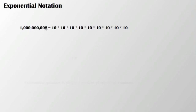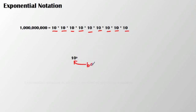Let's take a look at the number 1 billion. In this case, we're trying to see how many times is the base 10 used as a factor. We can see that in order to get a billion, I have to take 10 times 10 times 10 times 10 times 10 times 10 times 10 times 10 times 10. So the base 10 is used as a factor 9 times, and that 9 is our exponent because it shows that we took the number 10 and multiplied it by itself 9 times.